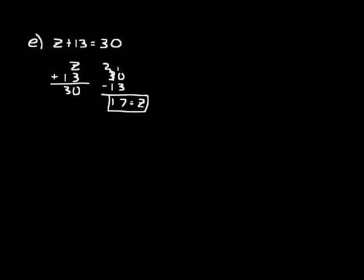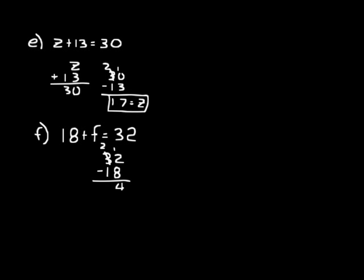The best way to do these problems is to do them in your head, because usually they're pretty simple addition or subtraction. If you need to write it out, do that — I'm writing it out just in case. But it would be best if you could do these in your head. Let's try 18 plus F equals 32. You can say 18 plus what equals 32? Well, 18 plus 14 is 32. Or do subtraction: 32 minus 18 — 12 minus 8 is 4, 2 minus 1 is 1. So F equals 14.